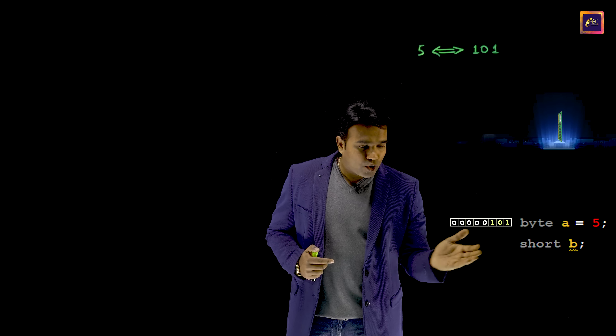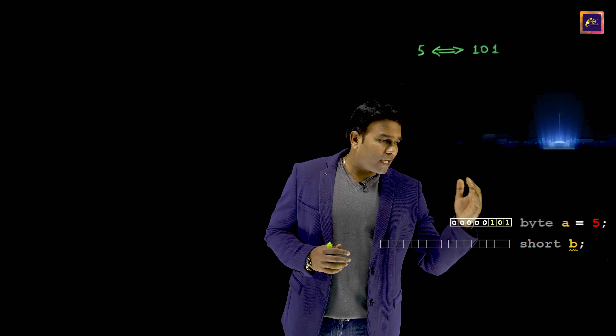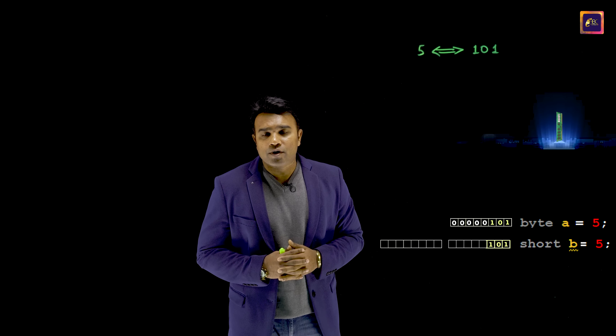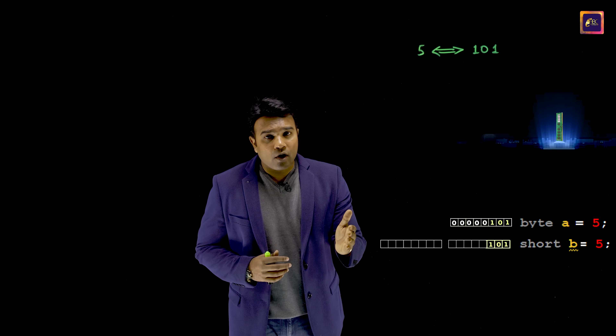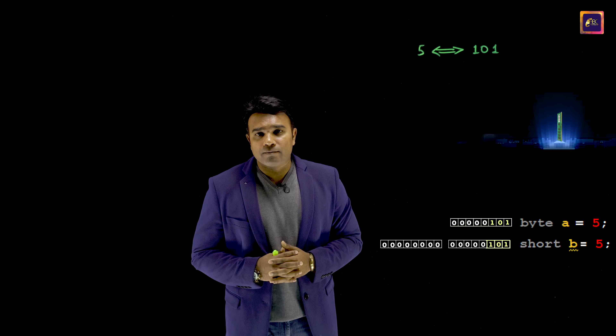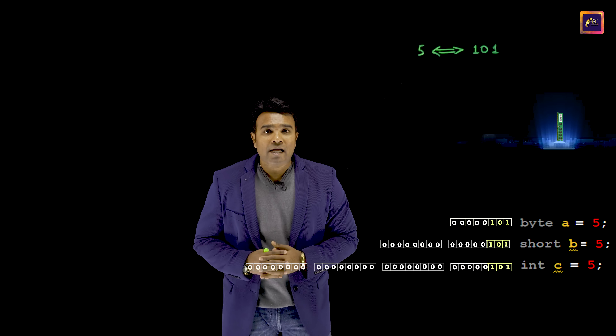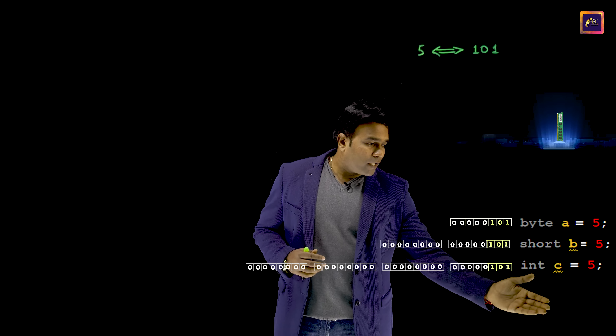Similarly, if I declare a variable as short, then 2 bytes are reserved, and if I initialize that to 5, this is the way the data is stored — again, with all 0s in the remaining bits. And if I declare the variable as of int type and initialize, this is what happens. And if I declare it as of type long and initialize, then this is what happens.